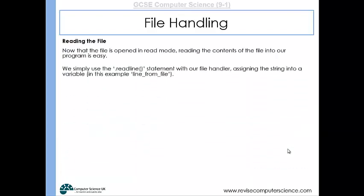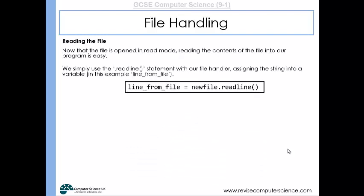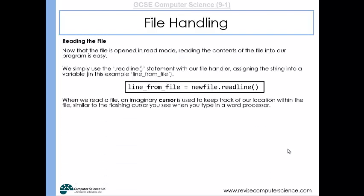Once it's opened up, we can then start to execute some statements that will be able to read the data from that file. We can use the dot readline statement with our file handler if we want to read a particular line. What we would end up with is the first line being read from the file and put into a variable. It's important to recognize that when we read a file, we use an imaginary cursor to keep track of our location within the file. Think of a similar thing to the flashing cursor in a word processor. After we've read the first line, the cursor is flashing at the start of the second line, ready to read that line afterwards.